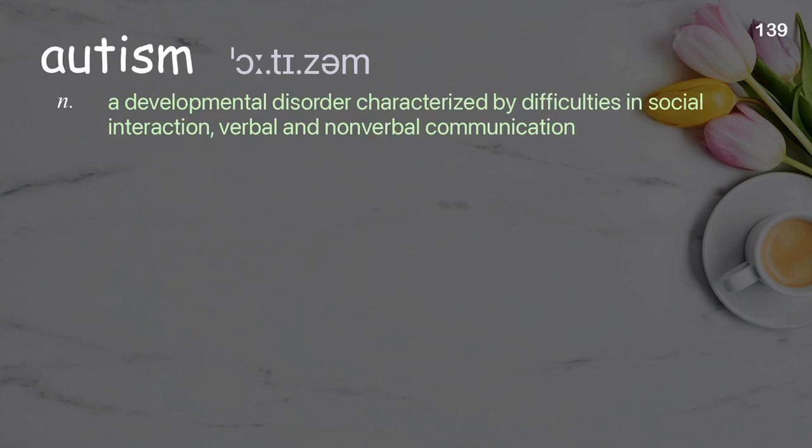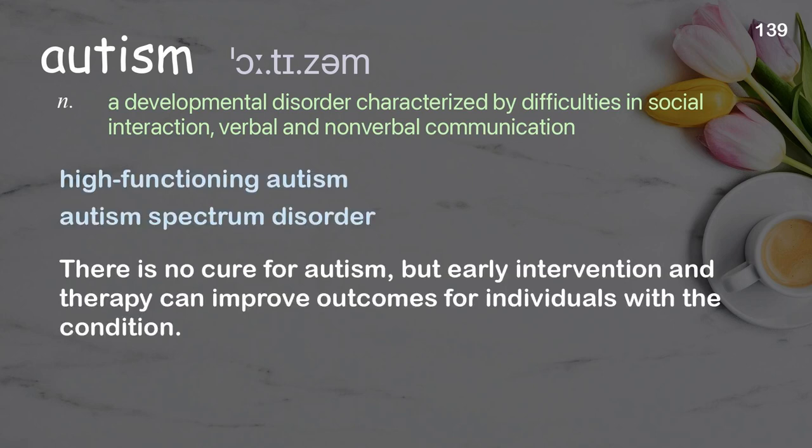Autism. A developmental disorder characterized by difficulties in social interaction, verbal and nonverbal communication. Examples: high-functioning autism, autism spectrum disorder. There is no cure for autism, but early intervention and therapy can improve outcomes for individuals with the condition.